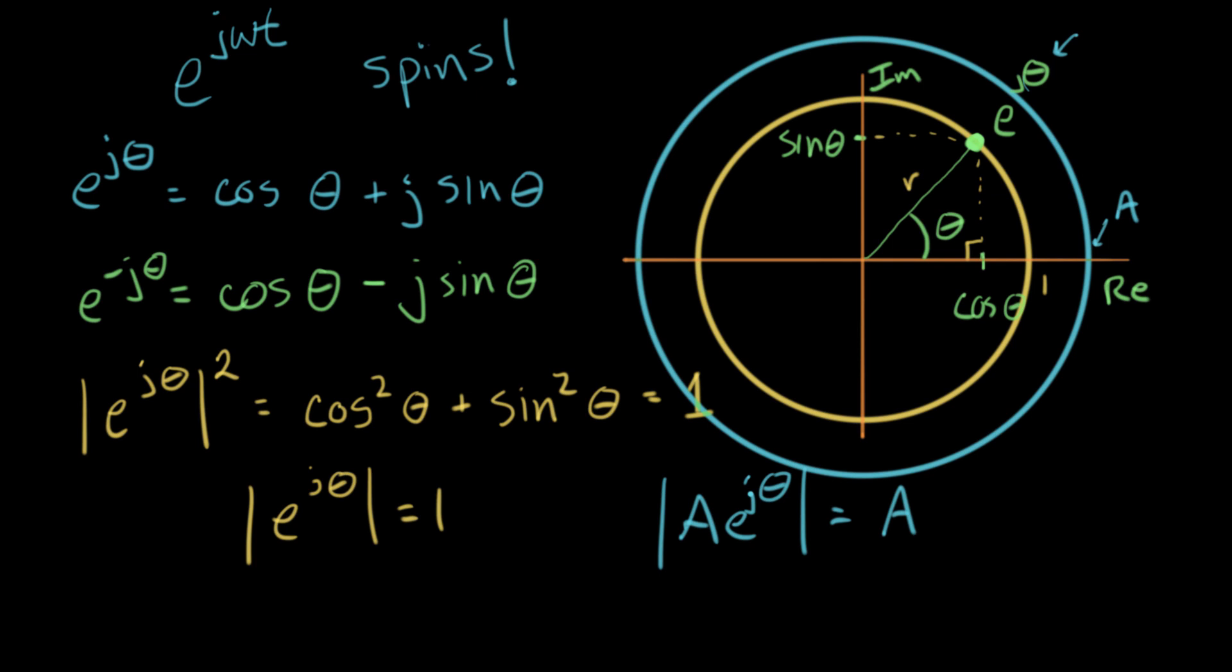Now we're going to look closely at this complex exponential as it represents a cosine, a part of a cosine.